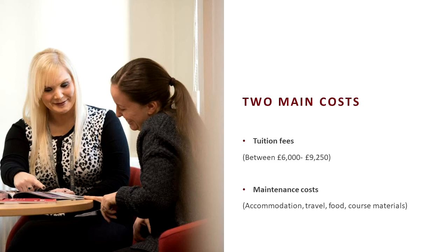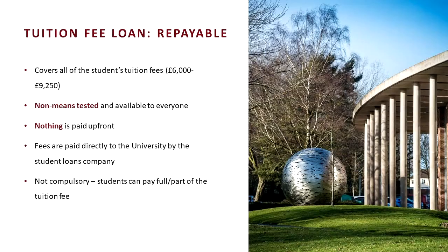Tuition fees are typically between £6,000 and £9,250 a year, and maintenance costs cover things like accommodation, travel, food and course materials. Your tuition fee loan is repayable and covers your tuition fees for that year — typically £9,250 a year for an undergraduate course. Do check with your university. It's not means tested, so they're not looking at your household income, and it is available to everyone, meaning you don't have to pay anything upfront. The fees are paid directly to the university by the student loan company, but it's not compulsory — students and families can pay in full or part. In reality, the vast majority of students will take out that tuition fee loan.